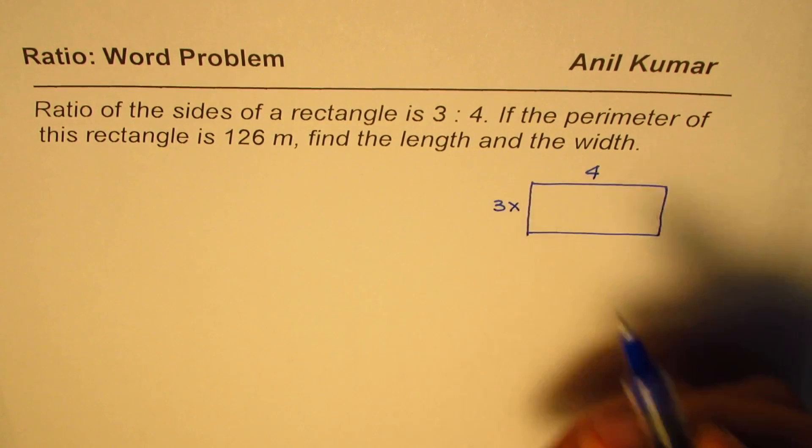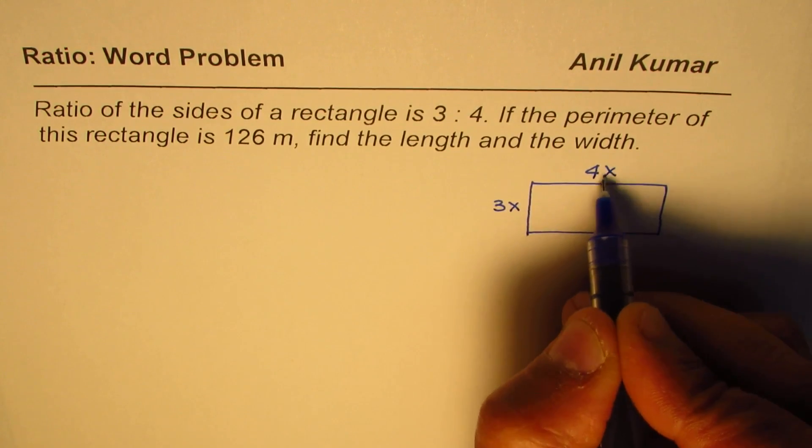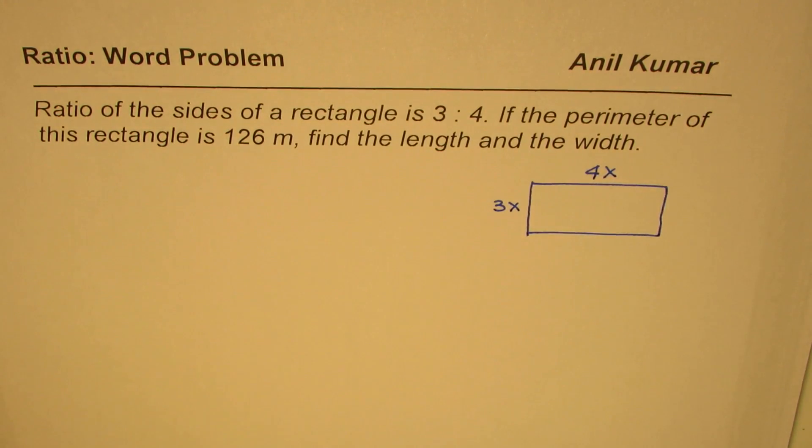So we could say 3 times any number is the width and 4 times any number is the length. Then the ratio will be 3 is to 4, correct?